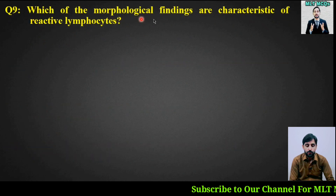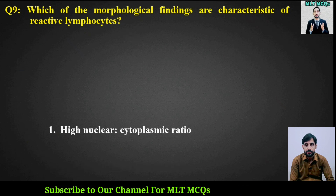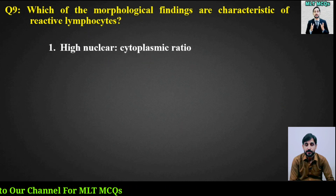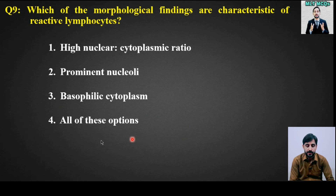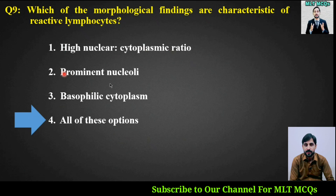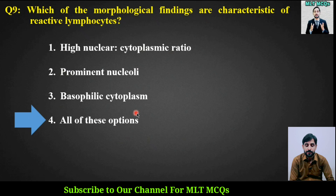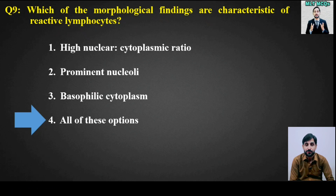The last MCQ: Which morphological findings are characteristic of reactive lymphocytes? Options are: high nuclear-to-cytoplasmic ratio, prominent nucleoli, basophilic cytoplasm, or all of the above. The right answer is option number 4, all of the above — high nuclear-to-cytoplasmic ratio, prominent nucleoli, and basophilic cytoplasm are all characteristic morphological findings of reactive lymphocytes.